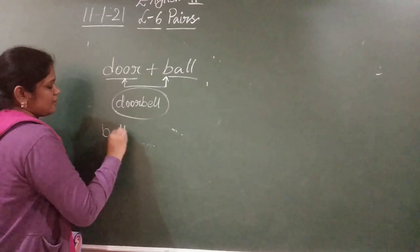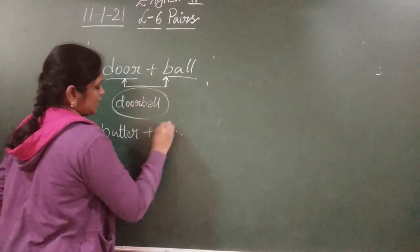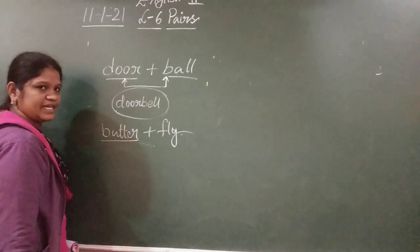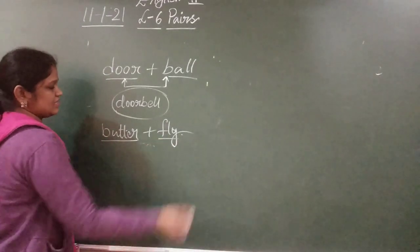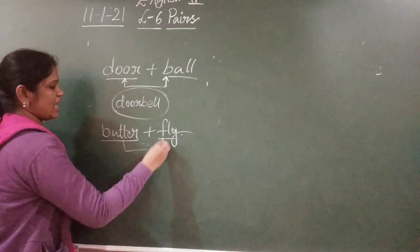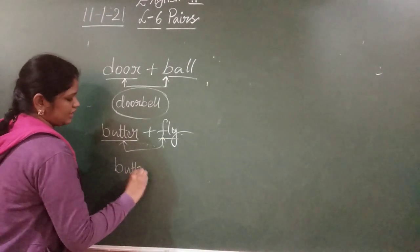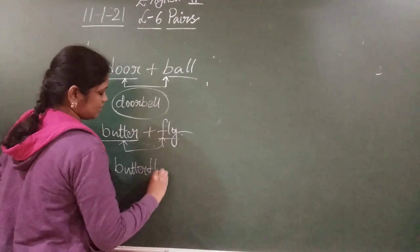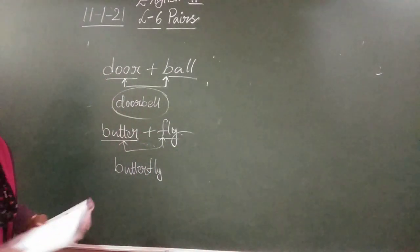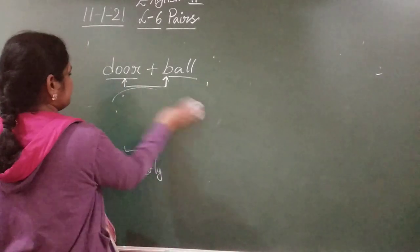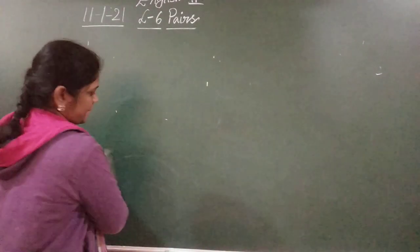Next, butter plus fly. Butter is a different naming word. Fly is a different naming word. You add these two, you will get one naming word. That is butterfly. These are the joining words.